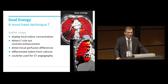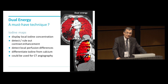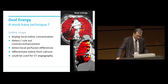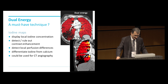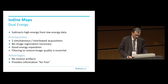If you look at dual energy for the lungs, it is a technique that displays local iodine concentration and is able to detect and rule out enhancement areas within the lung tissue, and therefore also detect local perfusion differences. It allows you to differentiate iodine from calcium and it can also be used for CT angiography.